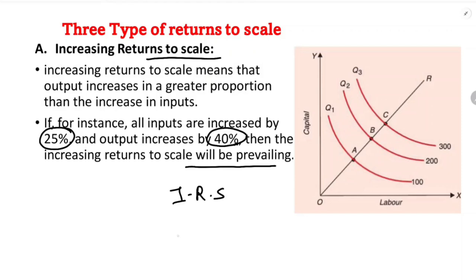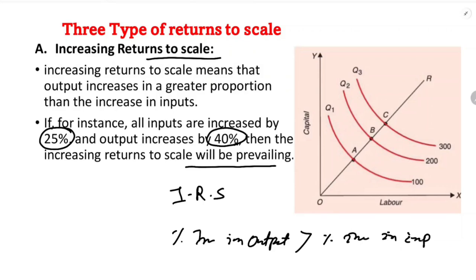So here, the percentage increase in output is more than the percentage increase in input. For example, if input increases by 10 percent and output increases by 20 or 30 percent, then that is increasing returns to scale. We can see the distance between the isoquants decreases.